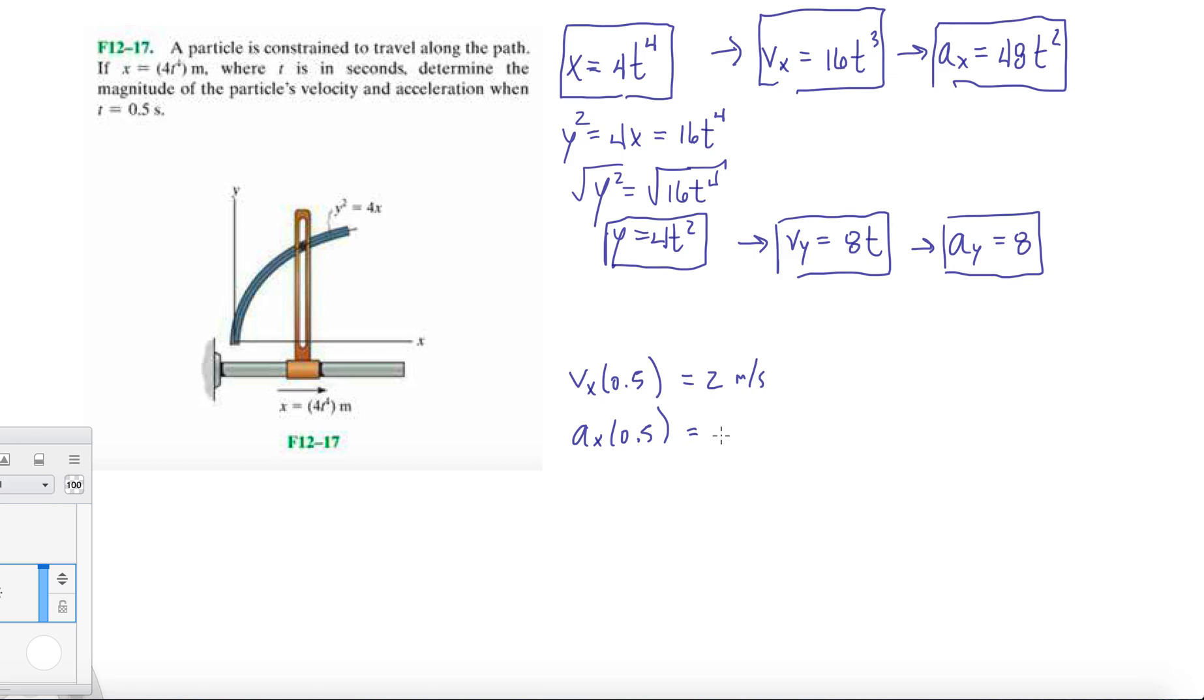a_x, the acceleration in the x direction at time equals 0.5 seconds, will result in an acceleration of 12 meters per second squared. And let's do the same thing for the y. For the y we end up getting 4 meters per second. For those who are joining, remember this is you just plug in the 0.5 into this equation wherever you see a t.